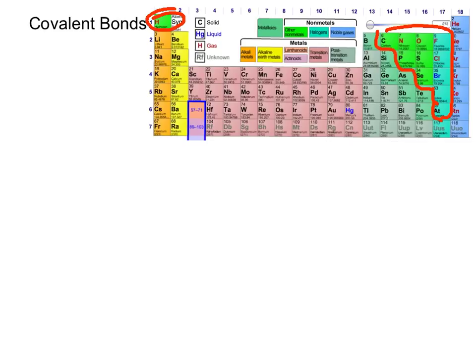Today we're going to talk about another kind of chemical bonding called covalent bonds, and that's when non-metals actually join together. Hydrogen is also considered a non-metal. So if I take hydrogen and join it with oxygen, that would be a covalent bond. Or if I take carbon and join it with hydrogen, it would also be a covalent bond.